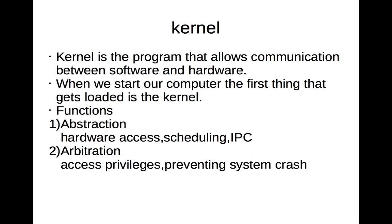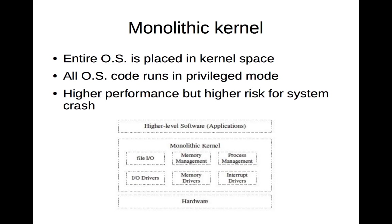If processes want to communicate with each other, they need to do it via the kernel — they cannot interact directly. The kernel also supports arbitration, that is access privileges, and it also protects the system from getting crashed.